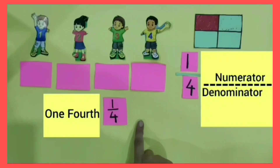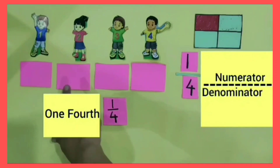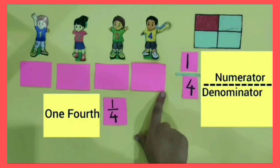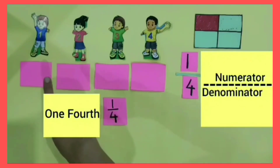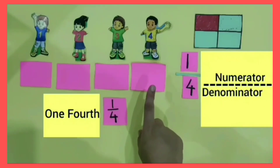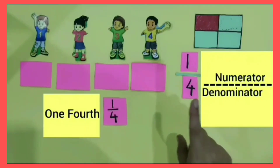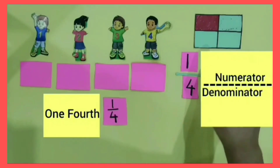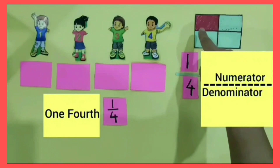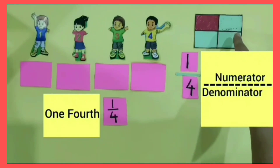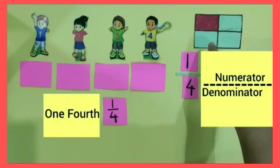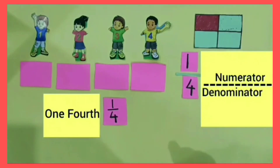For your homework, take a thing and divide it into four equal parts and distribute those parts among your four friends. Also, take any shape, divide it into four equal parts, and color one-fourth of it. Thank you.